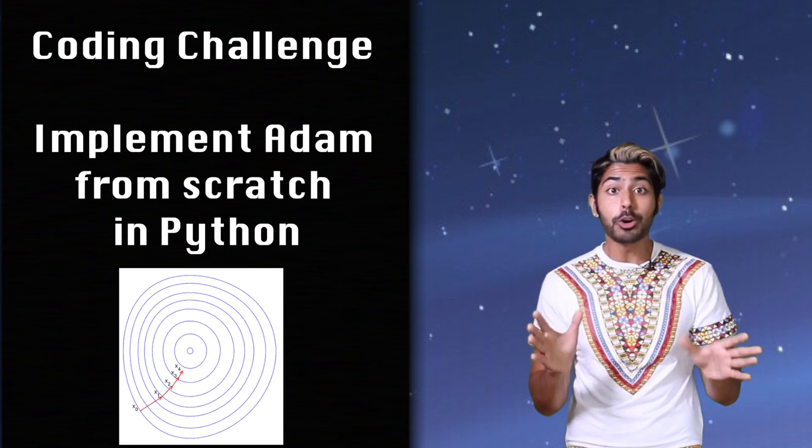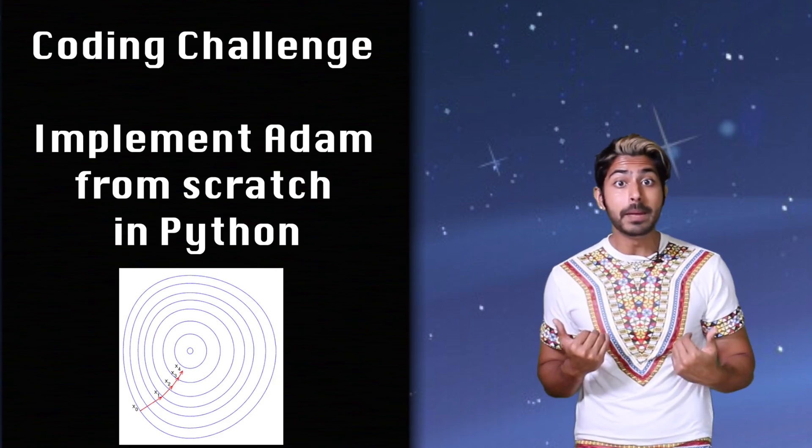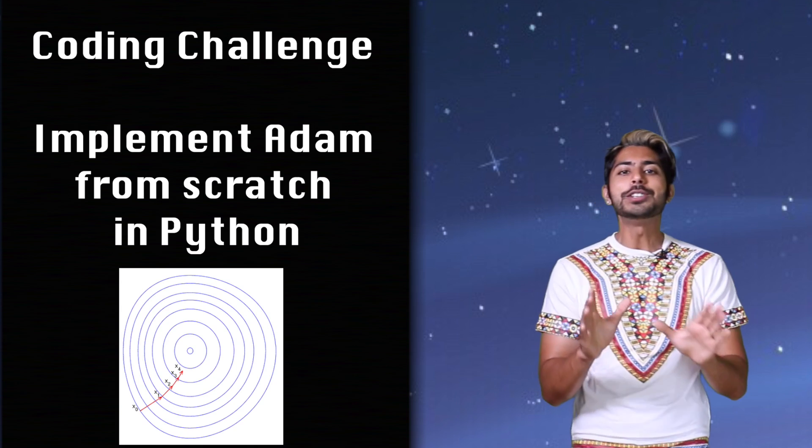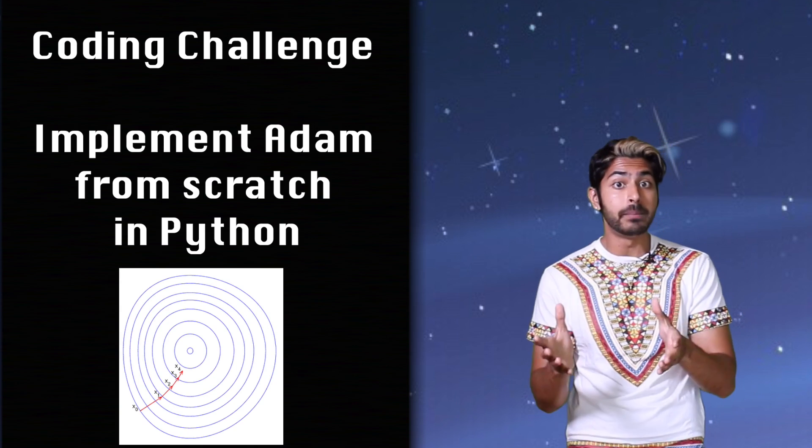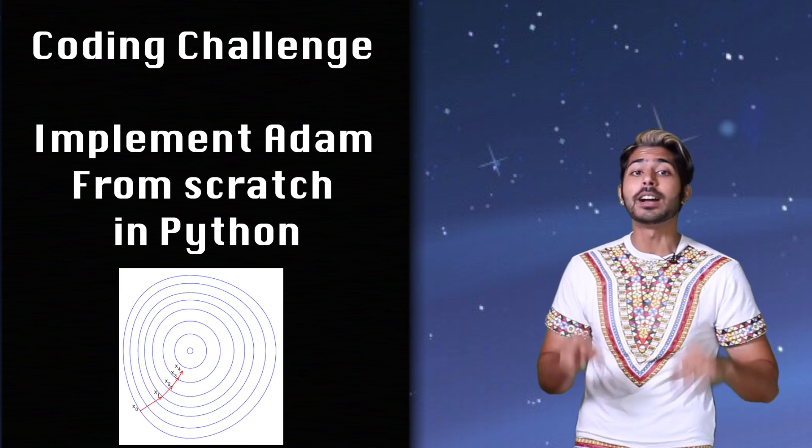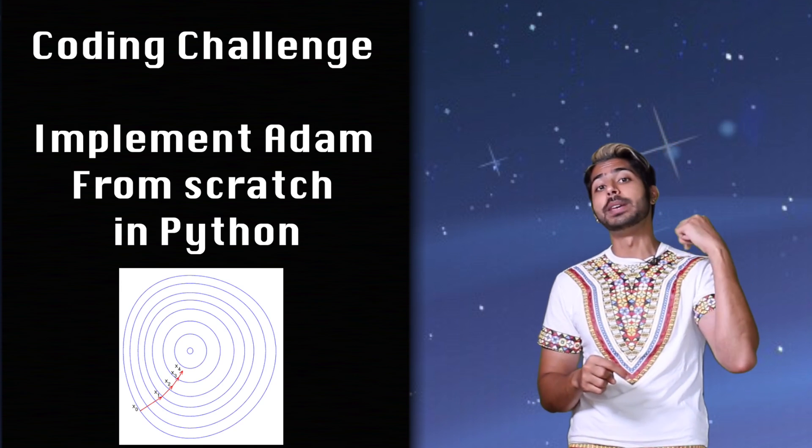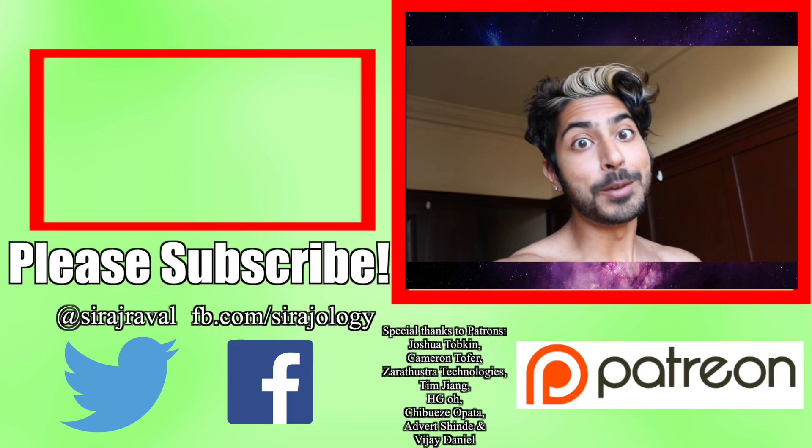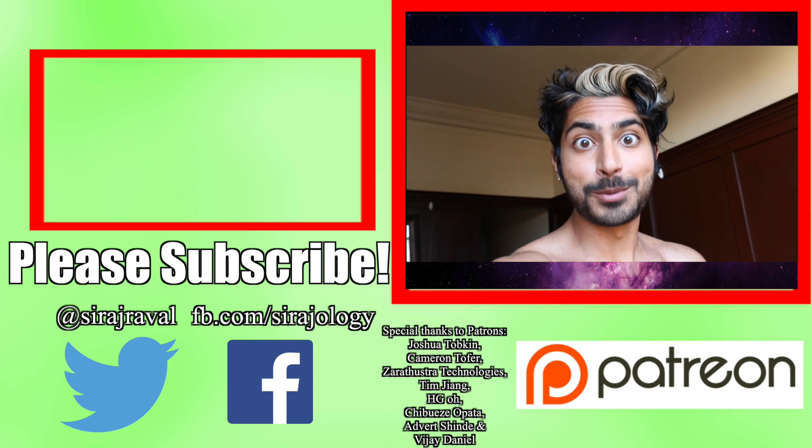I know we've talked about a lot of different optimization strategies, and it's a lot to take in all at once. So, what better way to apply this knowledge than by implementing one by yourself? The coding challenge for this week is to implement Adam from scratch in Python. Details are in the README, GitHub links go in the comments, and winners will be announced in one week. If you subscribe, all of your dreams will come true.